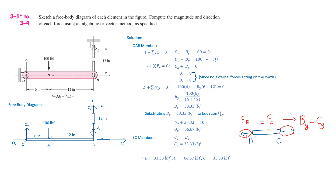So, to summarize the final answers: By equals 33.33 LBF, Oy equals 66.67 LBF, and Cy equals 33.33 LBF. That's it for this video. Next, we're going to solve problem 3.2. Thank you for watching — I hope you can understand my explanation. If not, add a comment below and I will help any way I can.